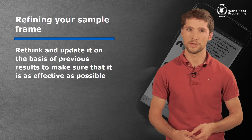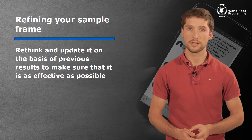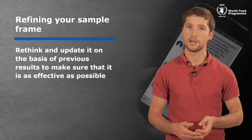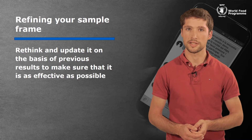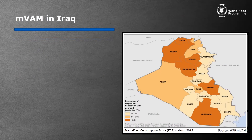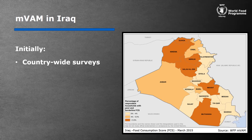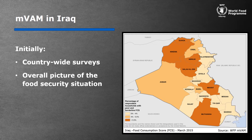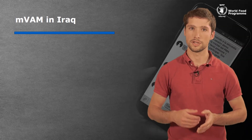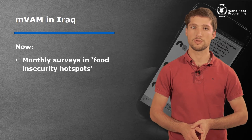Always remember that the sample design doesn't have to remain stable over time. In fact, it's important to rethink and update it in the light of previous results to make sure it's as effective as possible. This is exactly what MVAM did in Iraq. Initially, we carried out countrywide surveys to get the greatest number of responses and a whole picture of the food security situation. However, after a year of data collection, the WFP country office decided this information was not enough — they knew there were parts of Iraq where the food security situation was particularly bad, and they needed more granular information. Based on information about these food insecurity hotspots, the survey was changed to focus on these areas.